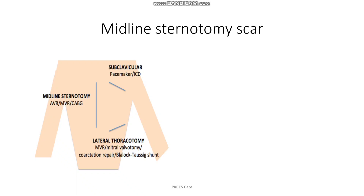If you find a median sternotomy scar only and your diagnosis is a possibility of prosthetic heart valve, you have to check for certain things. First, check for which sort of valve has been used — whether it is a tissue valve or mechanical valve. If you find a metallic click, the diagnosis would be mechanical heart valve prosthesis. If you can't find any prosthetic click, the diagnosis would be tissue or bioprosthetic heart valve.